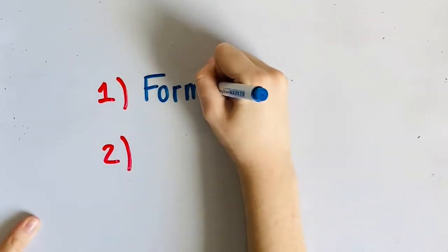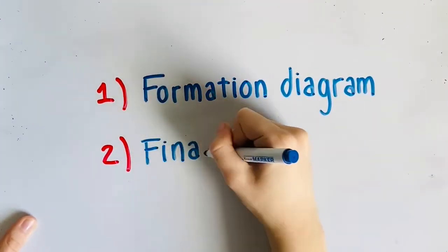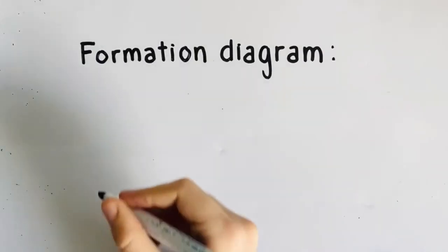Now here's how you draw a Lewis dot diagram. In a Lewis dot diagram, there are two parts: the formation diagram and the final diagram. First, let's draw the formation diagram.